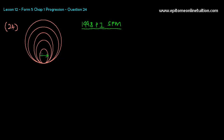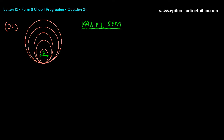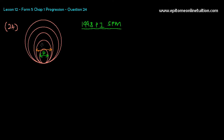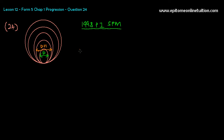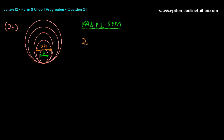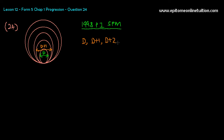Basically, this is D for the first circle. The second one would have a bigger D — it increases by 1 cm, so that would be D plus 1. The third one would be D plus 2, and then D plus 3. So the AP for the diameter itself: the first diameter is D, the second is D plus 1, the third is D plus 2, and so forth.